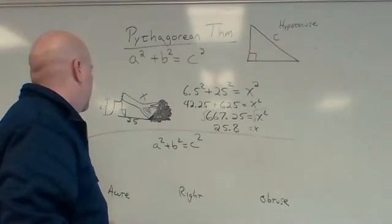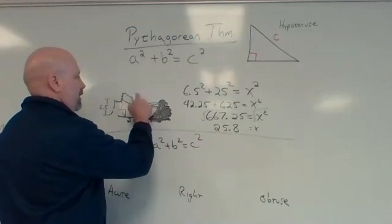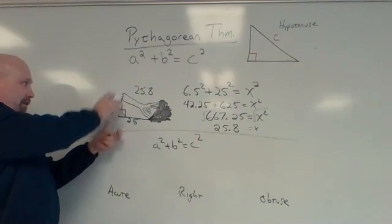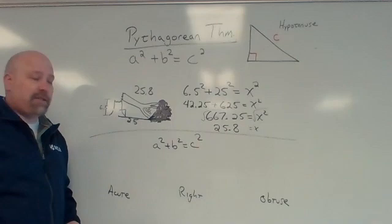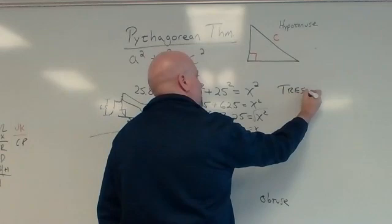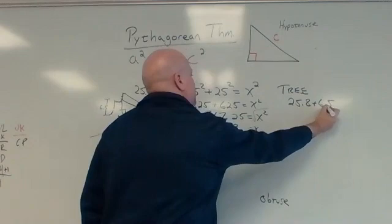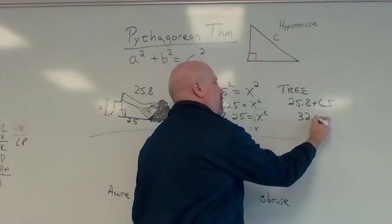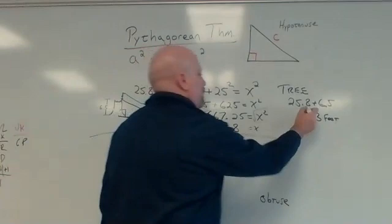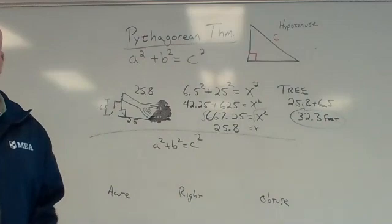Now, 25.8 was this section right here. The whole tree, when it was standing, if I put it back together, also has that trunk down of 6.5, or the stump down of 6.5. And so the whole tree was 25.8 plus 6.5, or 32.3 feet. And so that is an example of using Pythagorean theorem and then answering a greater question.